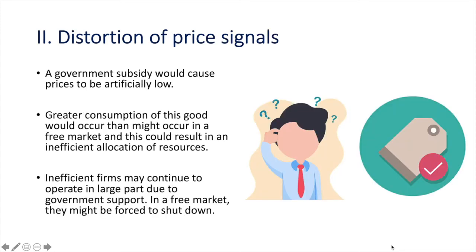Second is the distortion of price signals. The price mechanism plays a vital role in the allocation of resources in an economy. When the government interferes with this mechanism, it can cause distortions. For example, a government subsidy could cause prices to be artificially low. Greater consumption of this good would occur than might occur in a free market and this could result in an inefficient allocation of resources. For example, inefficient firms may continue to operate in large part due to government support. In a free market, they might be forced to shut down as they're not profitable.